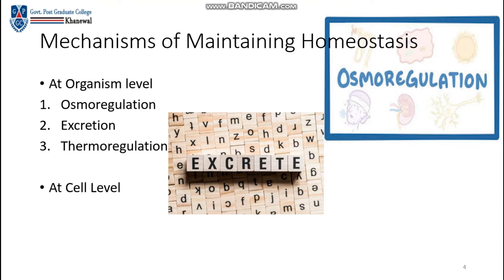Now we will move towards cell level. At cell level, we have internal environment and external environment. If any cell maintains its internal environment, or maintains balance with the outside environment, that is also called maintaining homeostasis.